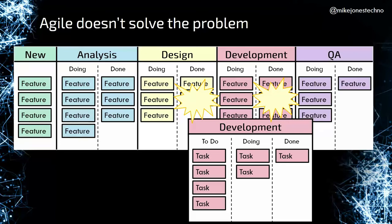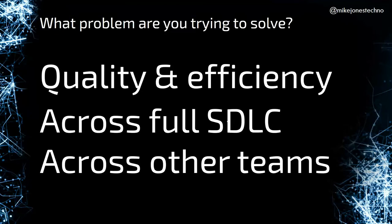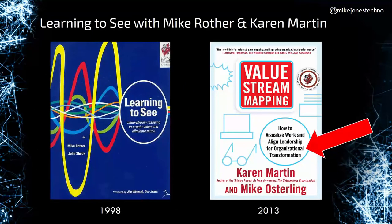Kanban boards are great for spotting bottlenecks — we can see stuff piling up between columns, even when we're using WIP limits. But we can't see other types of waste in the system and how it can get better. A lot of my challenges in testing weren't about optimizing the testing activity itself — they were caused by requirements not being clear enough, bugs in the code, coding quality issues, security and performance issues. My main bottlenecks were caused by the result of other teams, which led me to look at value stream mapping.